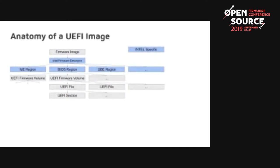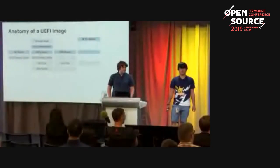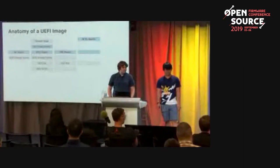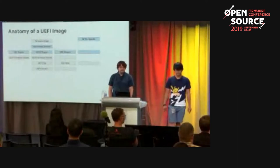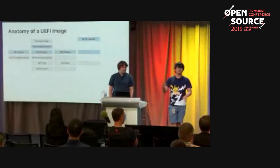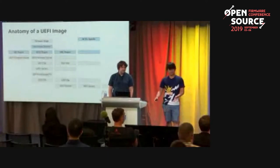For those not familiar with the anatomy of a UEFI image: the blue parts are Intel-specific but the general structure is the same. On Intel platforms you have the IFD — the Intel Firmware Descriptor — which separates the image into regions: the ME region, gigabit ethernet region, and BIOS region. We focus only on the BIOS region. For AMD, QEMU OVMF, or ARM UEFI images, you typically don't have the descriptor — you start right at the firmware volumes. Inside those volumes you have files, and inside each file you have sections. Sections can themselves contain more firmware volumes, files, and sections, leading to complex nesting, usually for compression purposes.